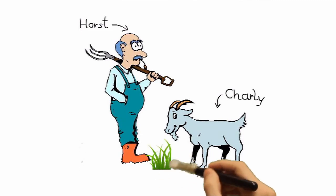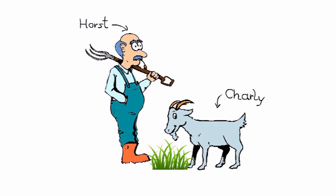Ja, der Charlie, der frisst besonders gerne frisches Gras, wie ihr hier sehen könnt. Und das tut er am liebsten in der freien Natur, wo das Gras am saftigsten und am besten schmeckt.